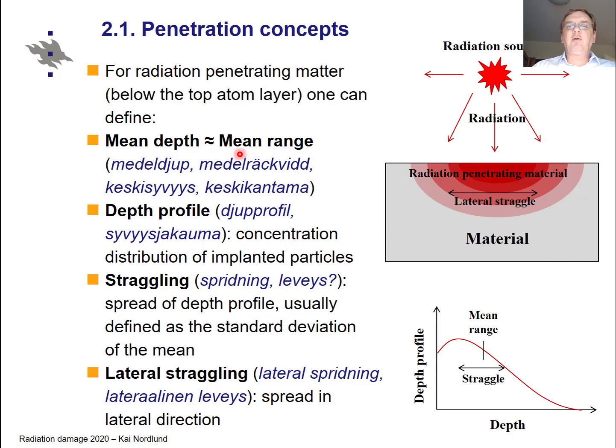The mean depth or mean range is very easy to understand - it simply means that on average how deep do the ions go. In reality, they almost never go to a single depth but instead there is a wide range profile, a profile of depths where they penetrate, and this is known as the range profile or depth profile. And the mean range is per definition the statistical mean of this distribution.